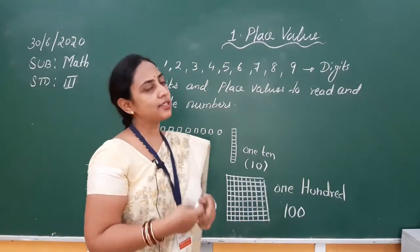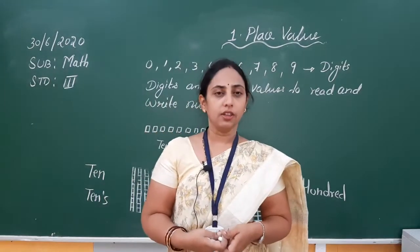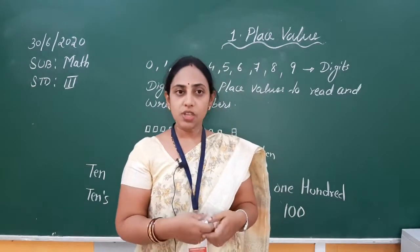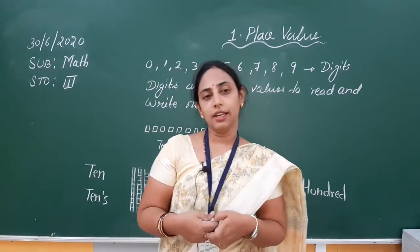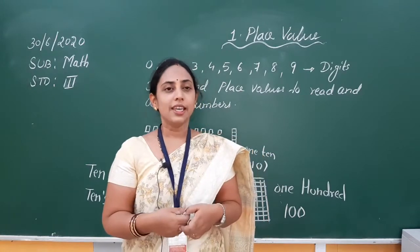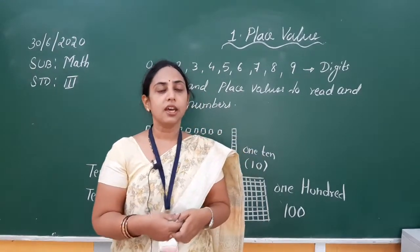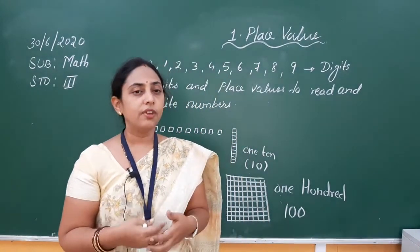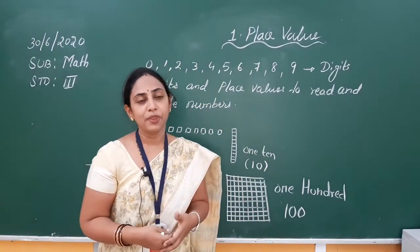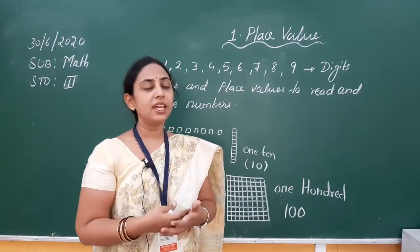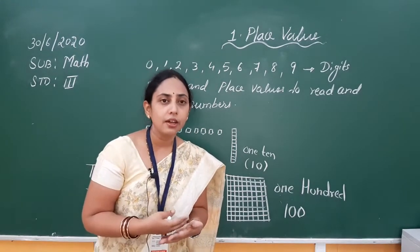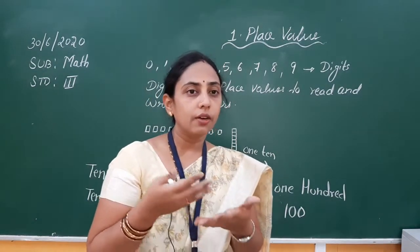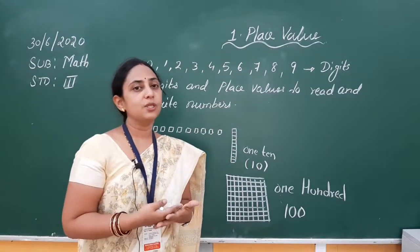Suppose if I ask you where you are living, you will say I am living in Jamnagar. So Jamnagar is the place where you are living, right? Same way, even numbers have their particular place, and accordingly we will read and write them. That is called the place value — the place where we are placing the number, the particular value of that number.